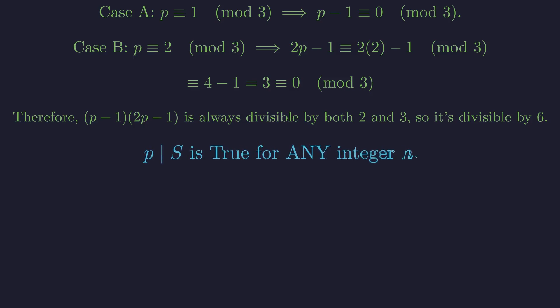This remarkable result means our condition is satisfied for every integer n. The sum s is divisible by p, which is 2003, for every possible value of n.